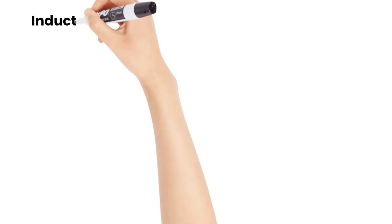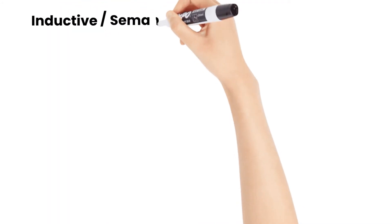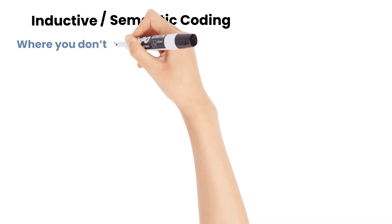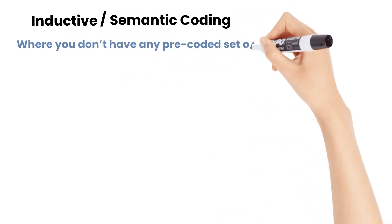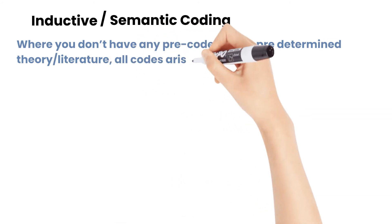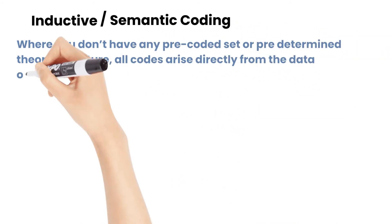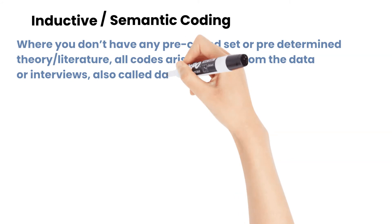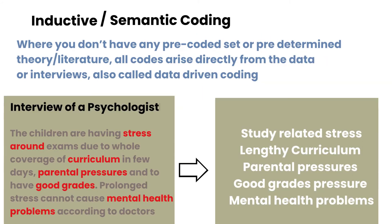The second type is inductive. We can also call it semantic coding. Here you don't have any pre-coded set or predetermined theory, literature. All codes arise directly from the data or interviews. It is also called data-driven coding. The example I discussed before is the example of semantic coding, where I extracted all the codes directly from the data or interview of a psychologist.